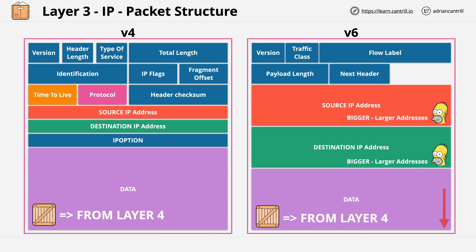We also have a similar field to the time to live value within IP version 4 packets. In IP version 6, this is called the hop limit. Functionally, these are similar — it controls the maximum number of hops that the packet can go through before being discarded.